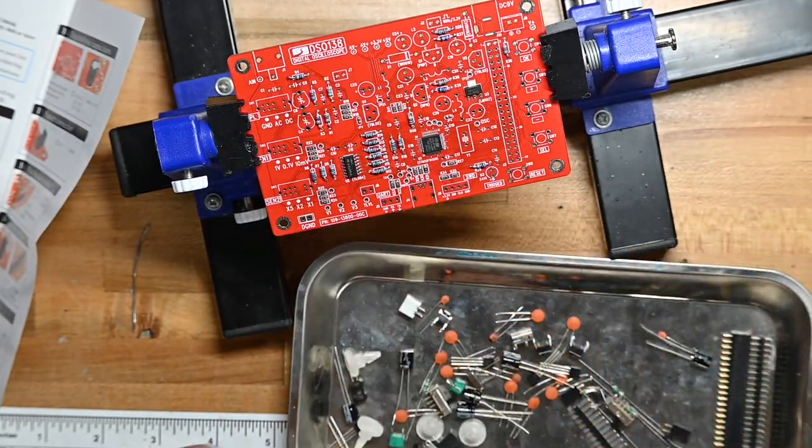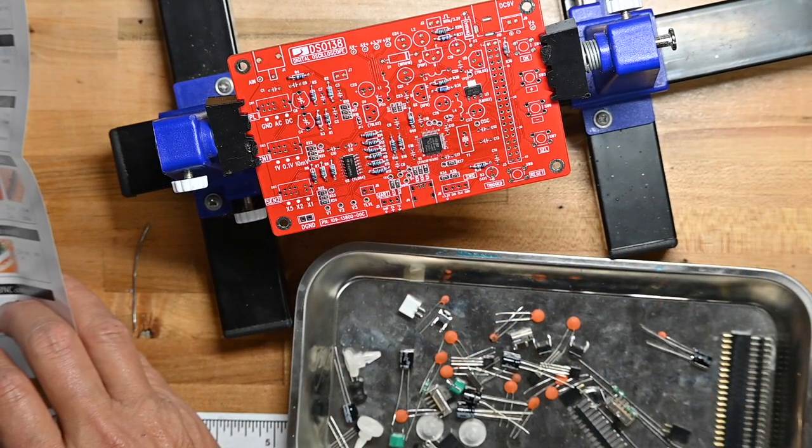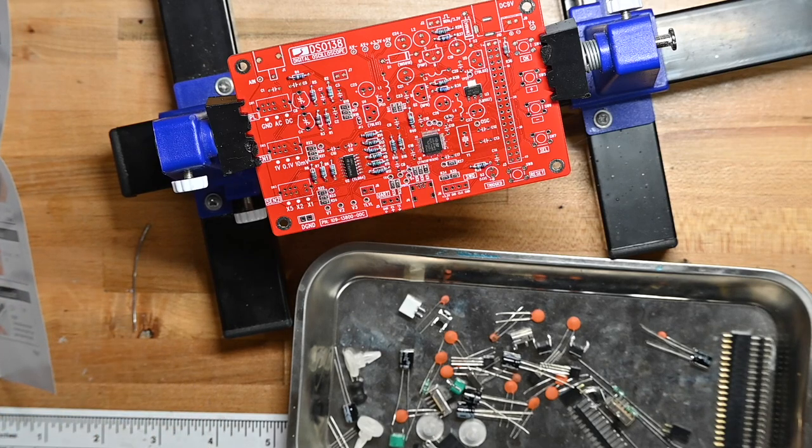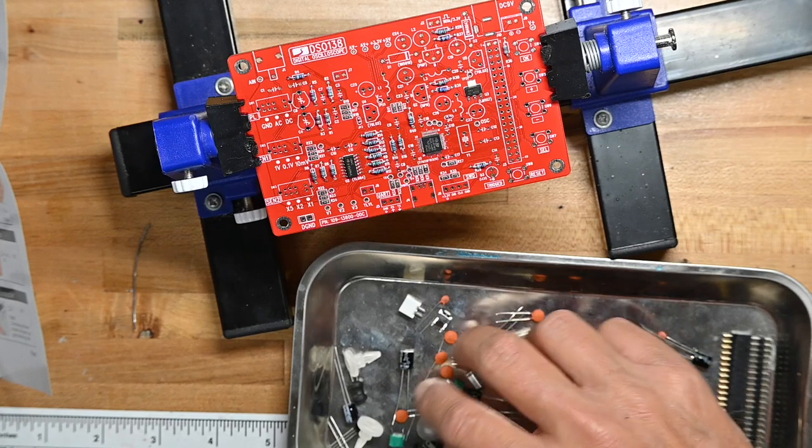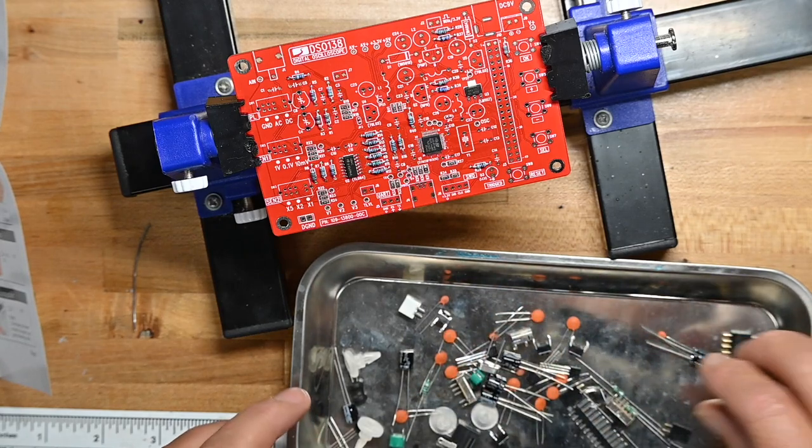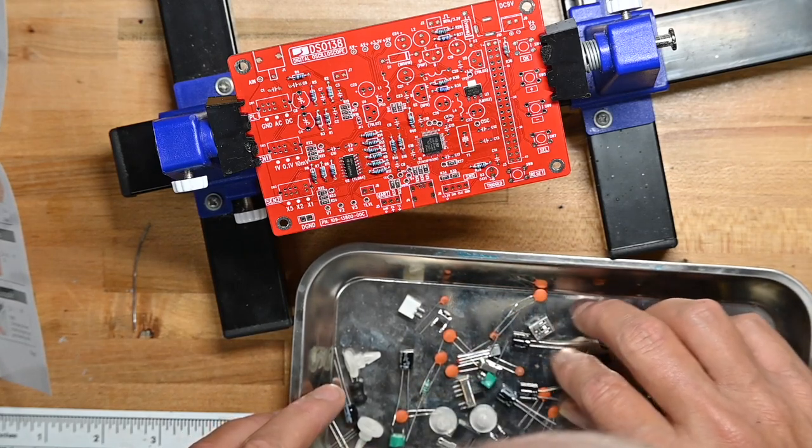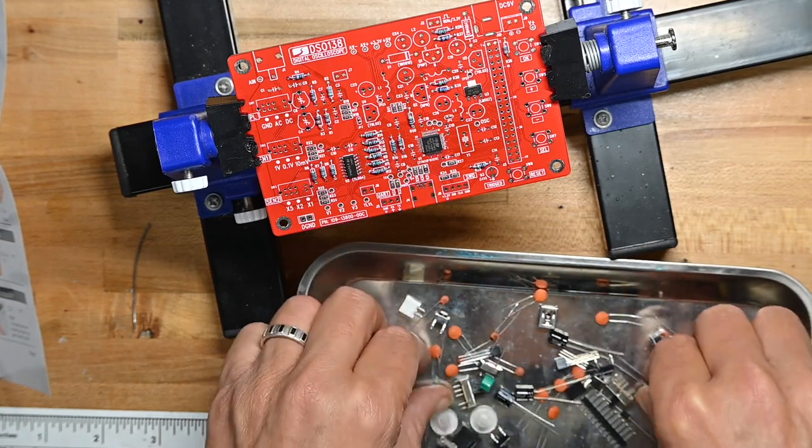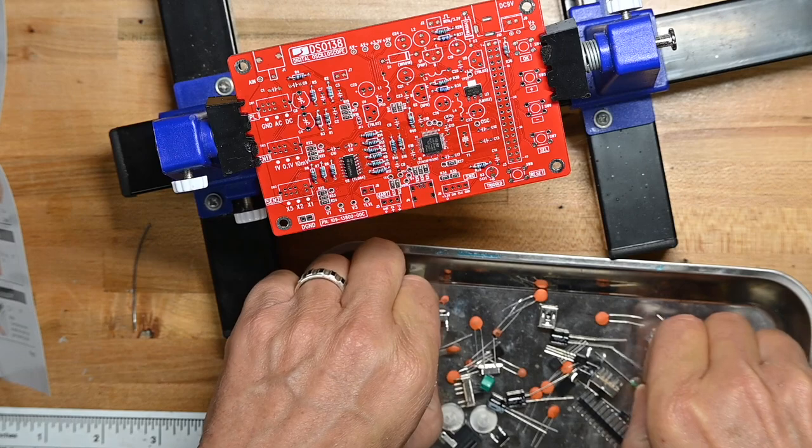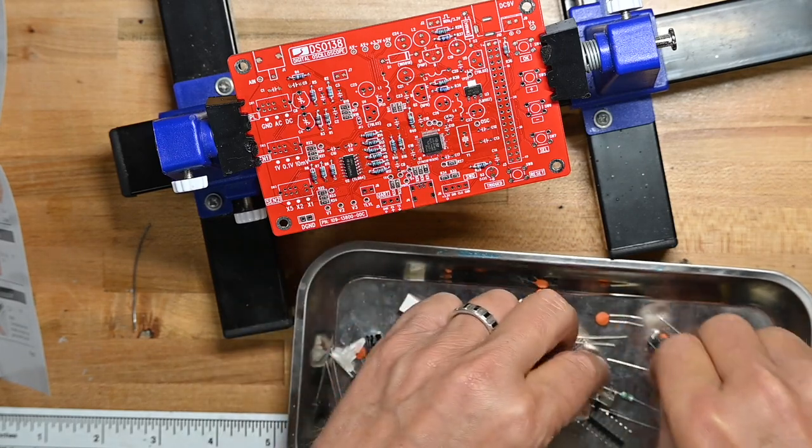Now we've got three chokes, or inductors, 100 microhenries. And where are they? There's one. There they are. There's all three of them. They're all the same value, so makes it easier.